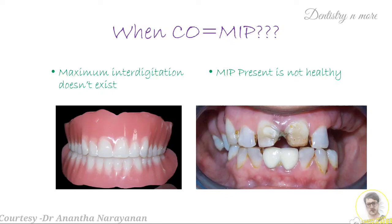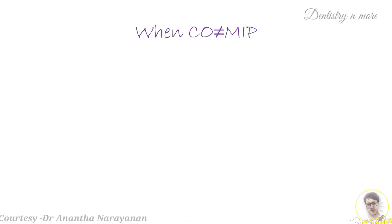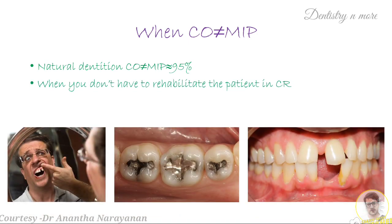Identifying the cases and conditions where CO should be equal to MIP comes with clinical practice. In almost 95% of adults in natural dentition, centric occlusion does not coincide with MIP, and there is almost 0.5 to 1 mm of discrepancy present between CO and MIP. Also, in conditions where we do a restoration for a single tooth using an FPD, an implant, class 1 amalgam or composite restoration, or a simple RPD, we give such restoration in the existing occlusion that is healthy to hold the restoration in place. So in such conditions, MIP does not coincide with centric occlusion.